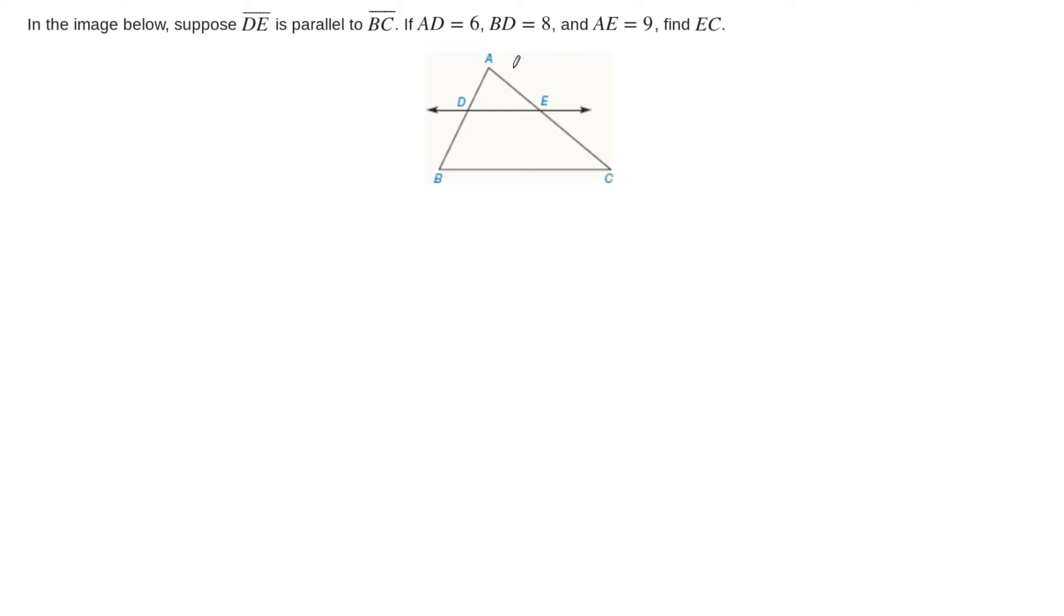In this example we are told that DE is parallel to BC, so these two segments are parallel to one another. And we are given some side lengths here. Side length AD is equal to 6 units, or has length 6 units.